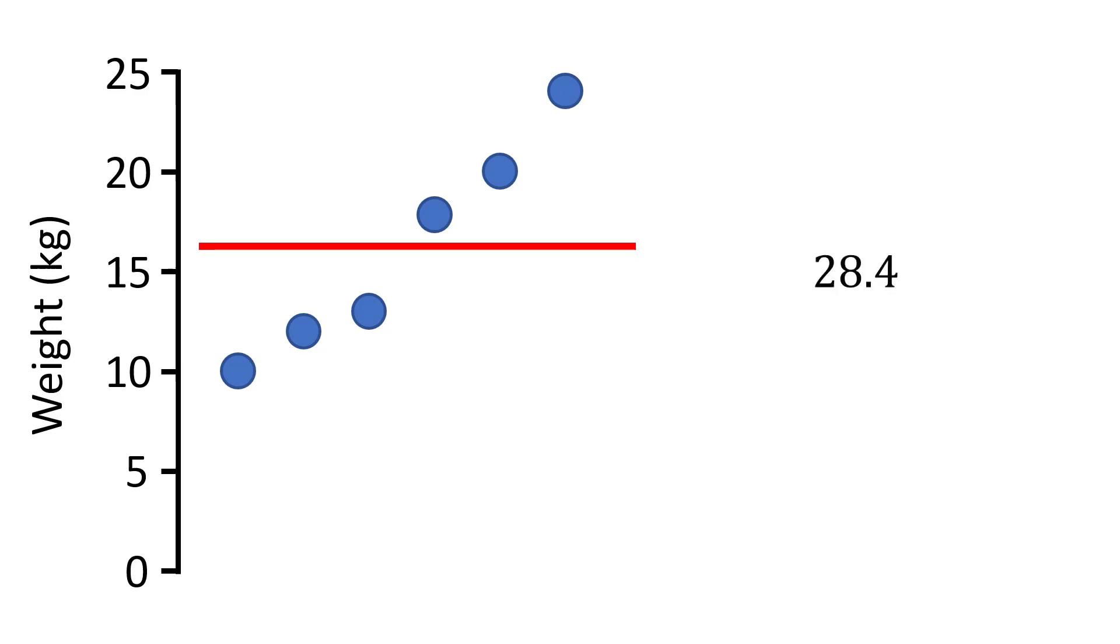And if you remember from the start of the video the definition of variance is the average of the squared differences from the mean. So this in fact is what this number represents. But what does the 28.4 actually mean?